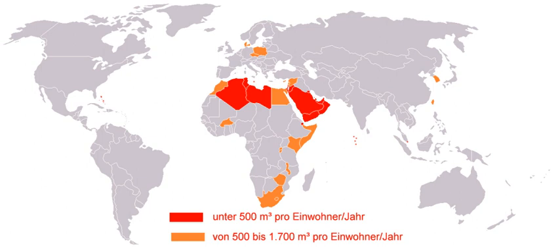Wastewater is water that has been discharged from human use. Primary discharges flow from residences, commercial properties, industry, and agriculture. Sewage is technically wastewater contaminated with fecal and similar animal waste byproducts, but is frequently used as a synonym for wastewater. Origination includes cesspool and sewage outfall pipes.